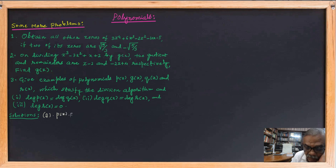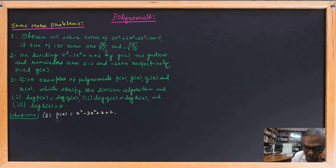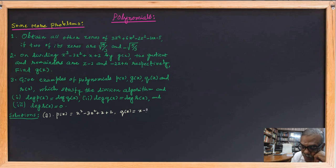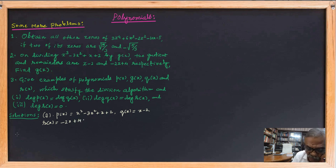p(x) equals x cubed minus 3x squared plus x plus 2 — it is already in standard form. The quotient is given as x minus 2, and the remainder r(x) is given as minus 2x plus 4.